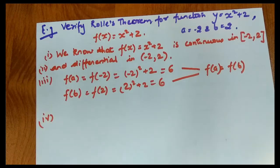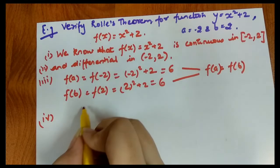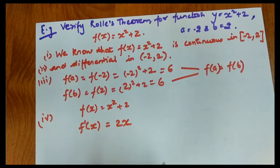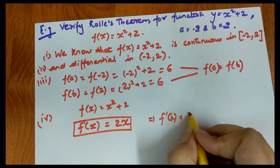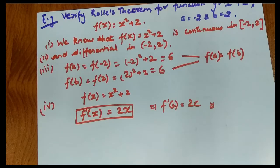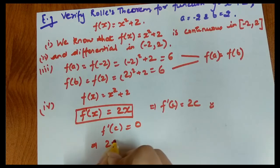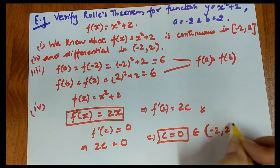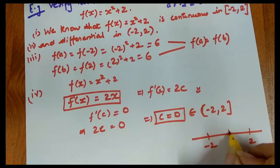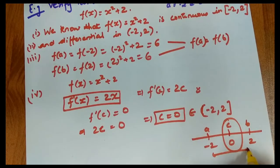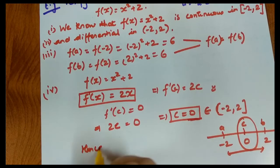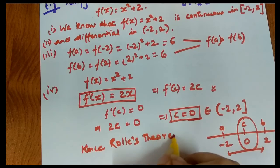Since all three conditions are satisfied, we check the fourth condition. f(x) = x² + 2, so f'(x) = 2x. Setting f'(c) = 0 gives 2c = 0, so c = 0. Since c = 0 belongs to (-2, 2), the point exists. Hence, Rolle's Theorem is verified and all four conditions are satisfied.